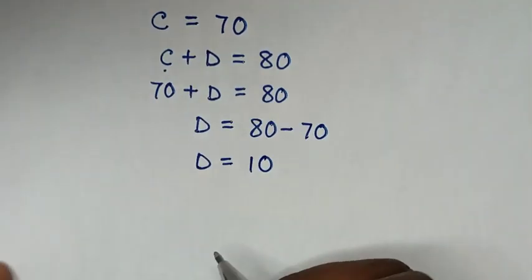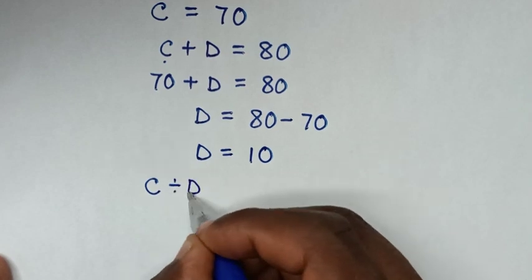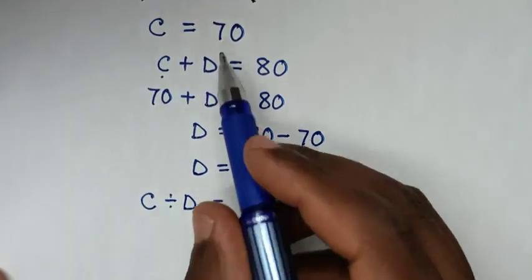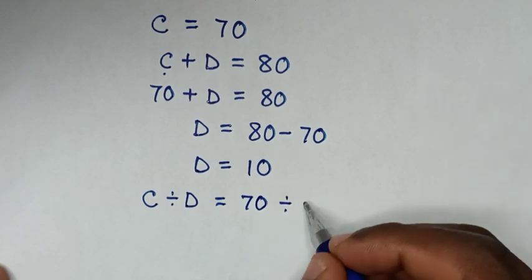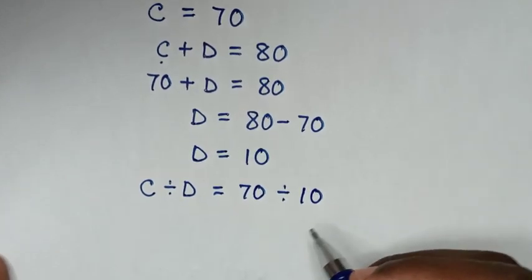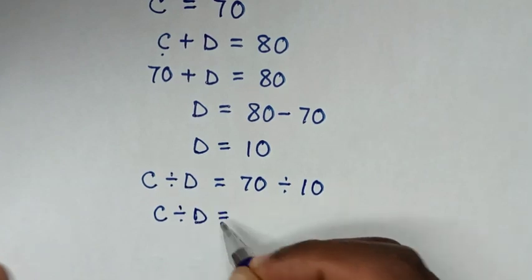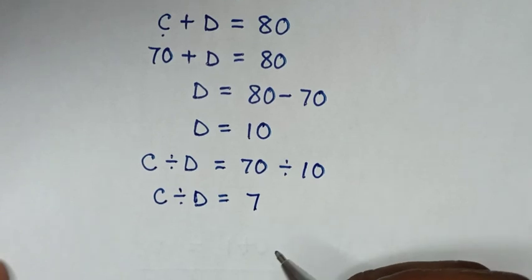Then from our equation asking to find the value of C divided by D, so it will be equal to 70. C divided by D equals 70 divided by 10 is 7. Therefore,